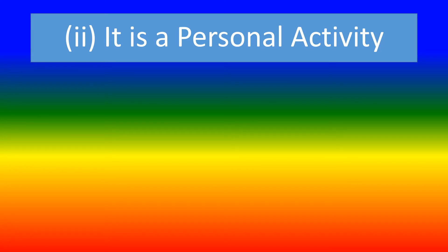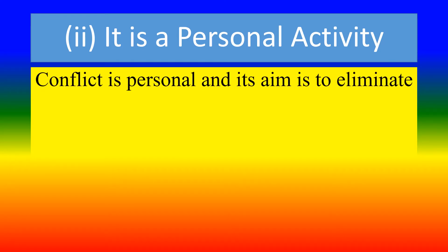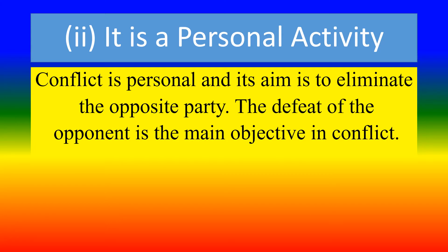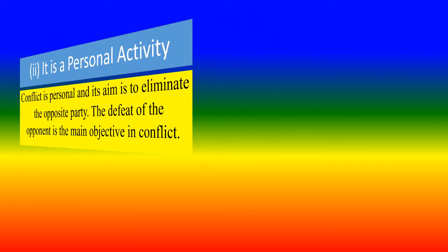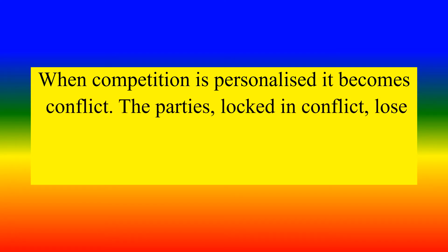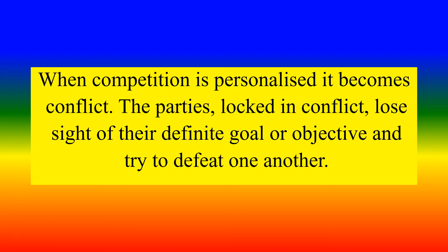Second, it is a personal activity. Conflict is personal and its aim is to eliminate the opposite party. The defeat of the opponent is the main objective in conflict. When competition is personalised, it becomes conflict. The parties locked in conflict lose sight of their definite goal or objective and try to defeat one another.